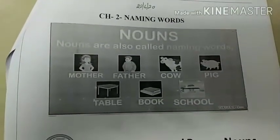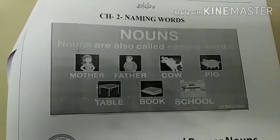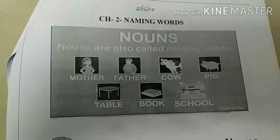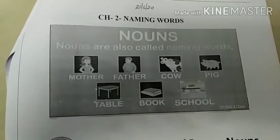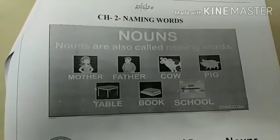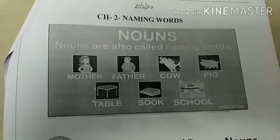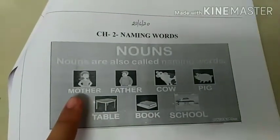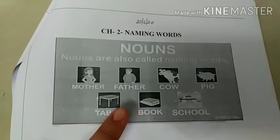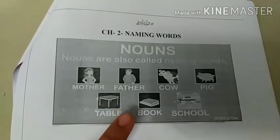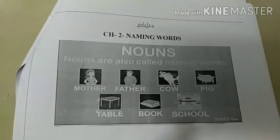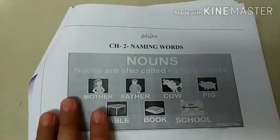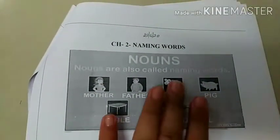Firstly, we will see what is a noun. As we all know, nouns are the name of a person, place, animal or thing. Here are a few examples of nouns: mother, father, cow, pig, table, book, school. Mother and father are names of persons. Cow and pig are names of animals. Table and book are names of things. And school is the name of a place. So we can say a noun is the name of a person, place, animal or thing.